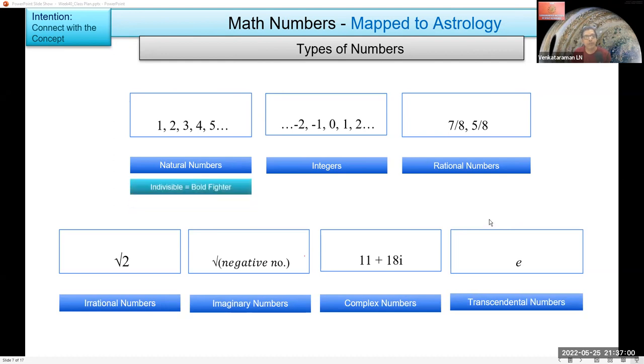So this one I consider as indivisible. That means they'll remain as it is. If it's a decimal or anything else, it's not going to be a natural number anymore. So the natural number is indivisible, equating it to bold fighter. Second one having negative also, so here is about thinking negative.